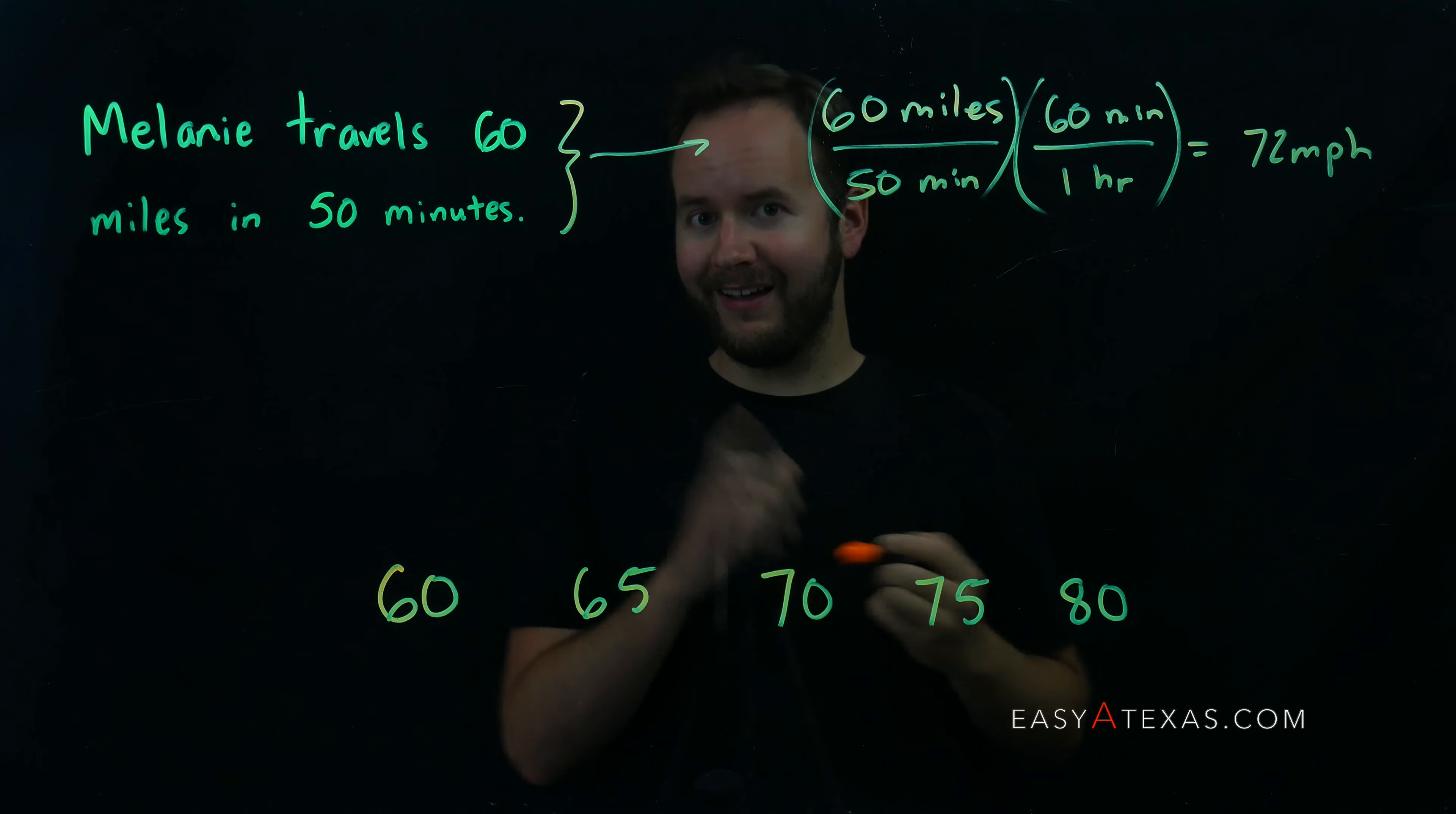If the speed limit were 70, however, she would be speeding because 72 miles per hour is over 70. So that is our answer.